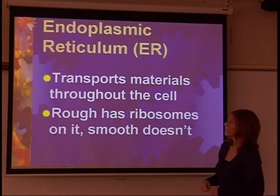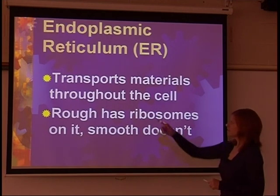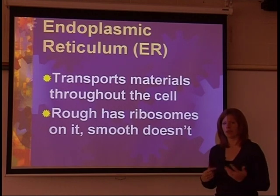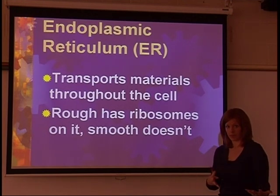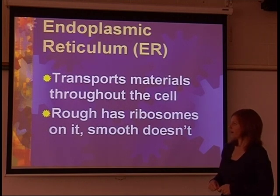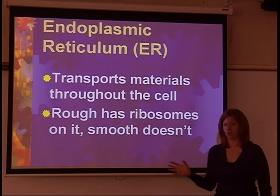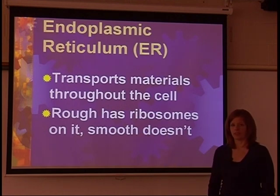The endoplasmic reticulum, or ER — the function of this is it transports materials throughout the cell, things like proteins. It will take them from one place to the other. There's two types of ER: there's a type called rough, which has ribosomes on it, and then there's smooth, which does not have ribosomes on it.